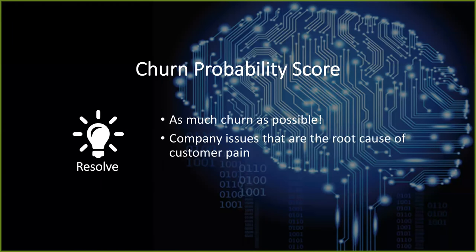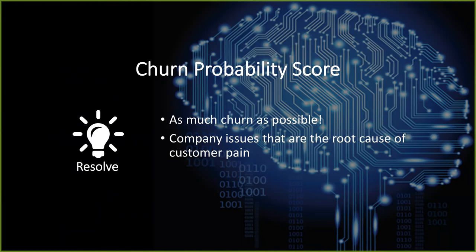The fifth benefit is resolve. This is what we all hope happens — we want to resolve as much churn as possible, renew as many dollars as possible. Those were hard-earned dollars, likely at a higher cost of acquisition initially than the cost of renewing them, making this very important to the SaaS business model. We also want to resolve any company issues that are systemic and address the root cause of any customer pain we uncover. All of these are benefits we received by using a CPS like this.